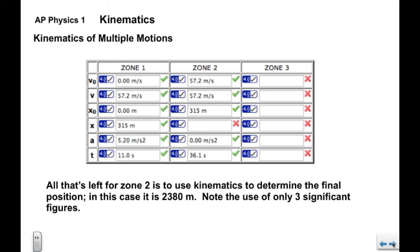Now all that's left for Zone 2 is to use the kinematics to determine the final position. In this case, it's 2,380 meters. Again, we leave out the actual kinematics. We know how to do that.